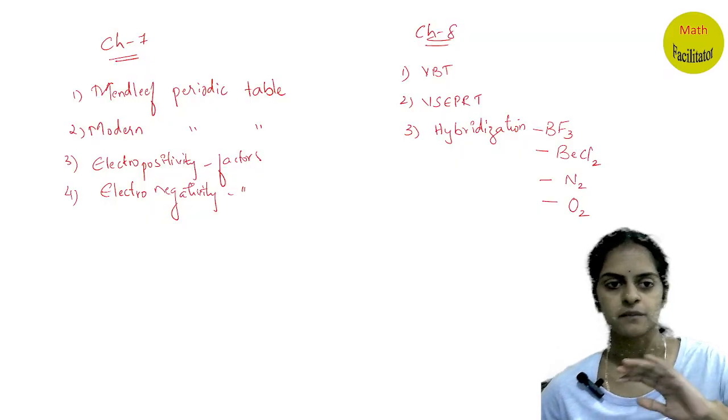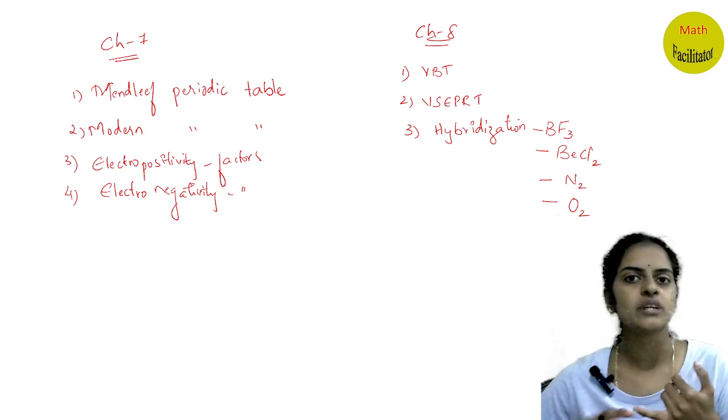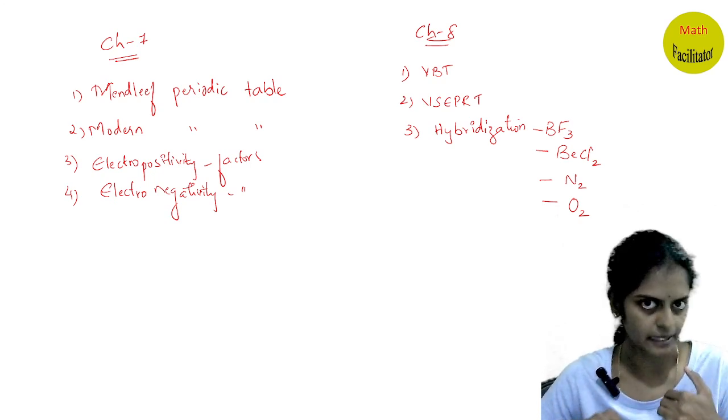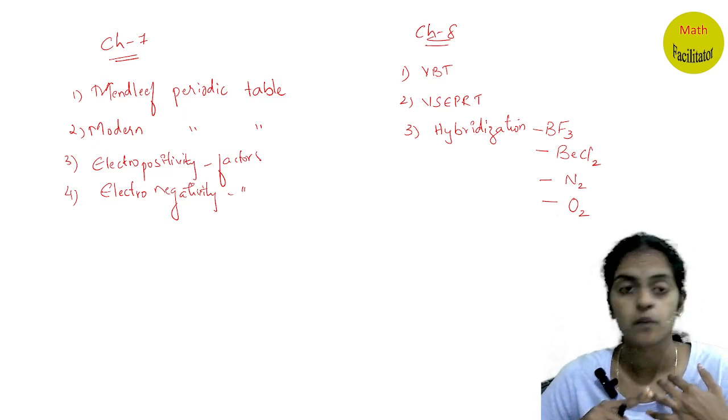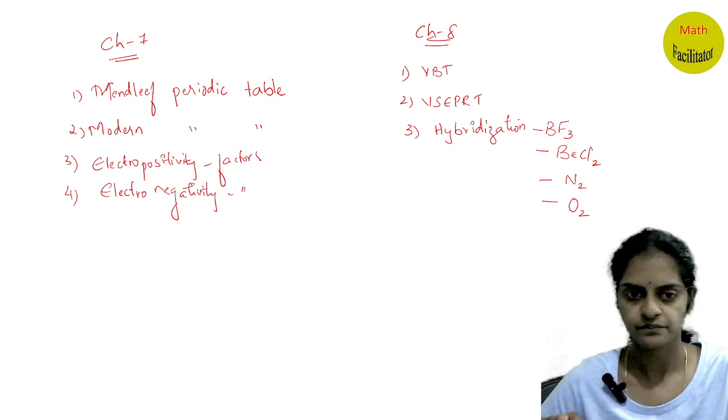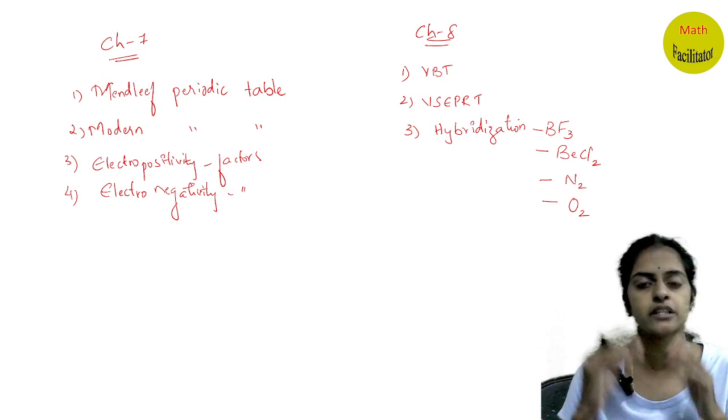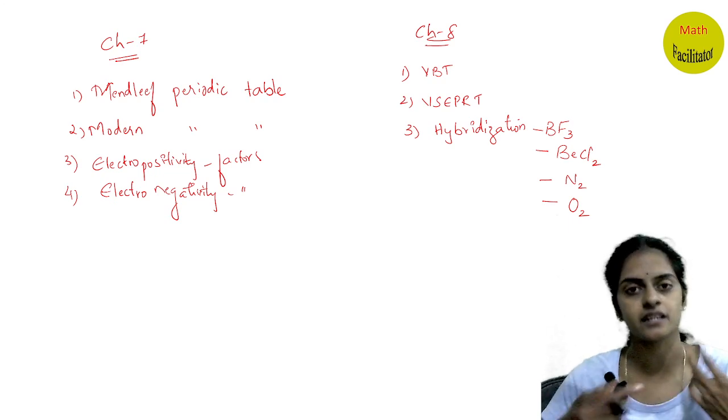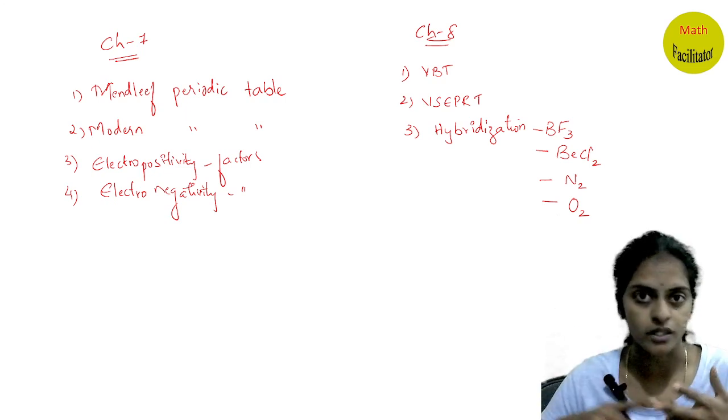In chapter seven, you will learn what is Mendeleev's periodic table, the features of Mendeleev's periodic table. Then you will learn modern periodic table, modern periodic law and modern periodic table. Mendeleev's periodic table, how are they arranged in groups and periods, then modern periodic table, how many periods are there, how many groups are there and the arrangement of the elements in modern periodic table.